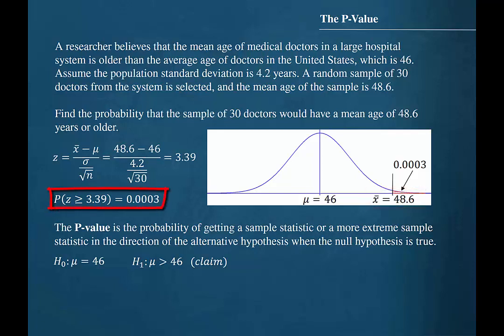Then we can state our probability as the probability that the sample mean would be equal to or exceed 48.6 is 0.0003.